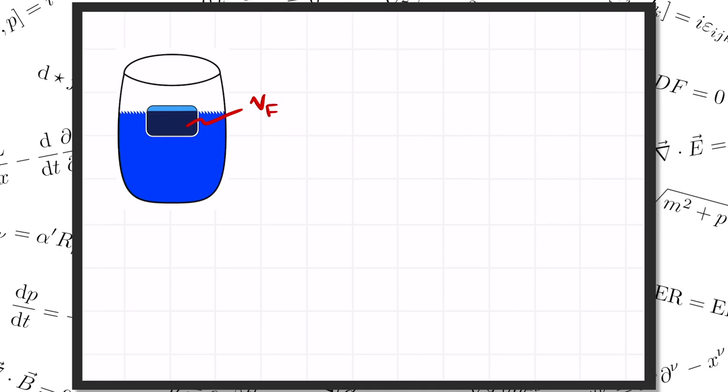We learned that the upward buoyant force on the ice cube equals the weight of however much fluid would have fit in that dark blue volume. That's the density of the liquid rho sub F times the volume V sub F times G. So that's the buoyant force.